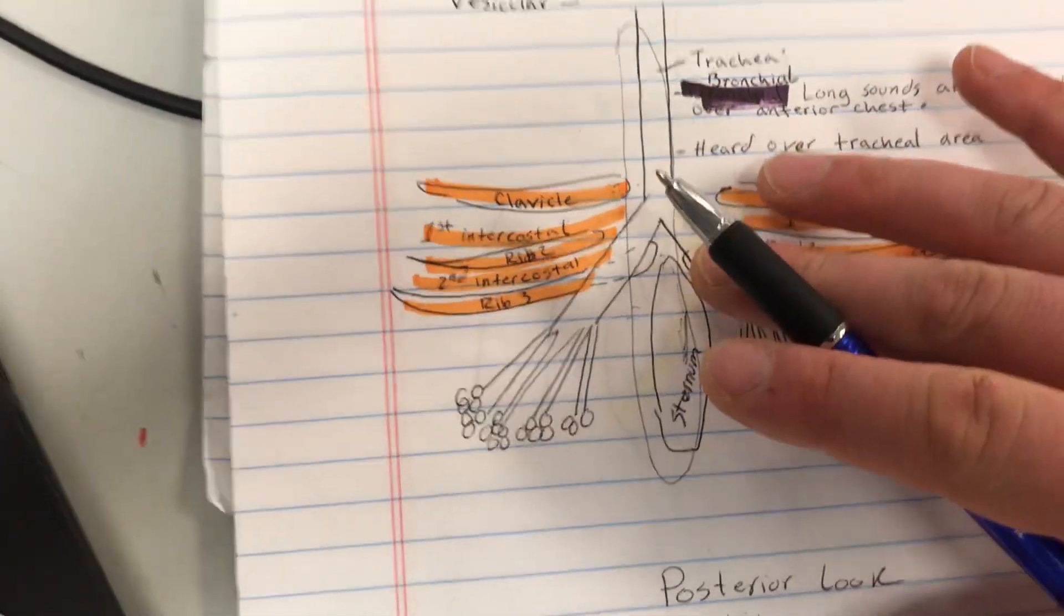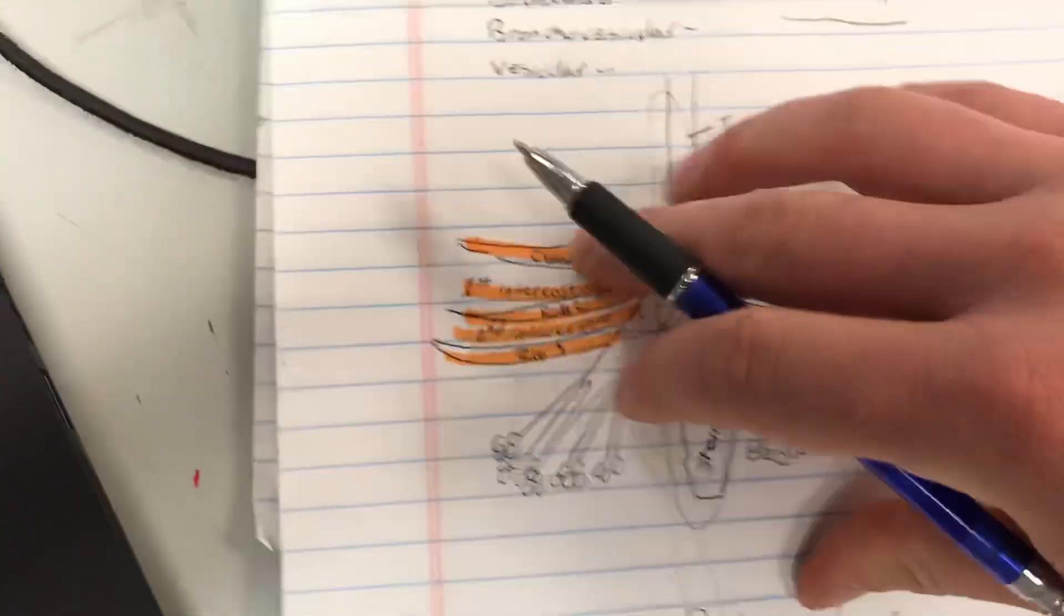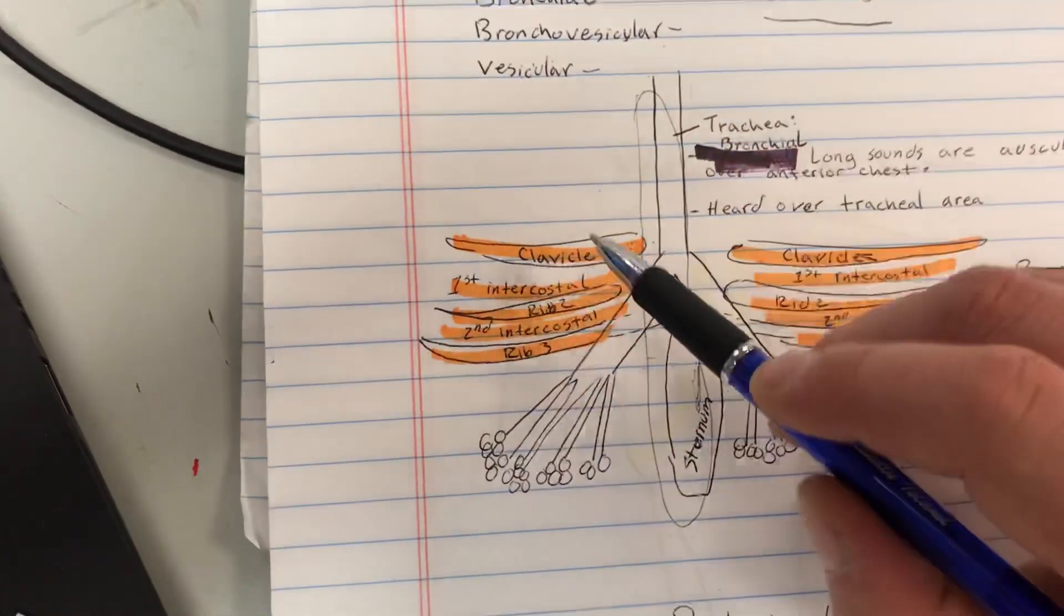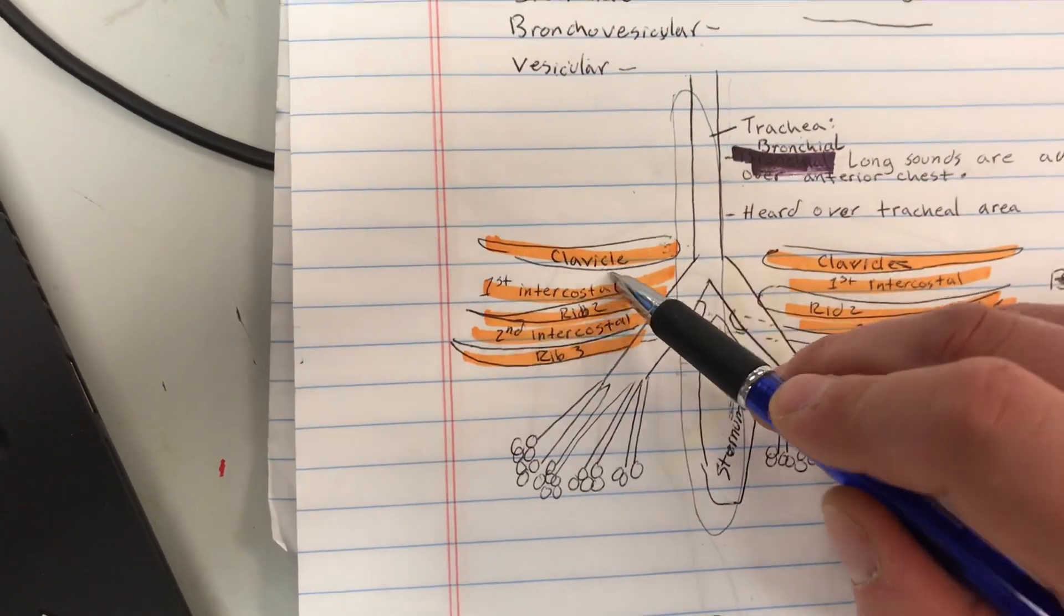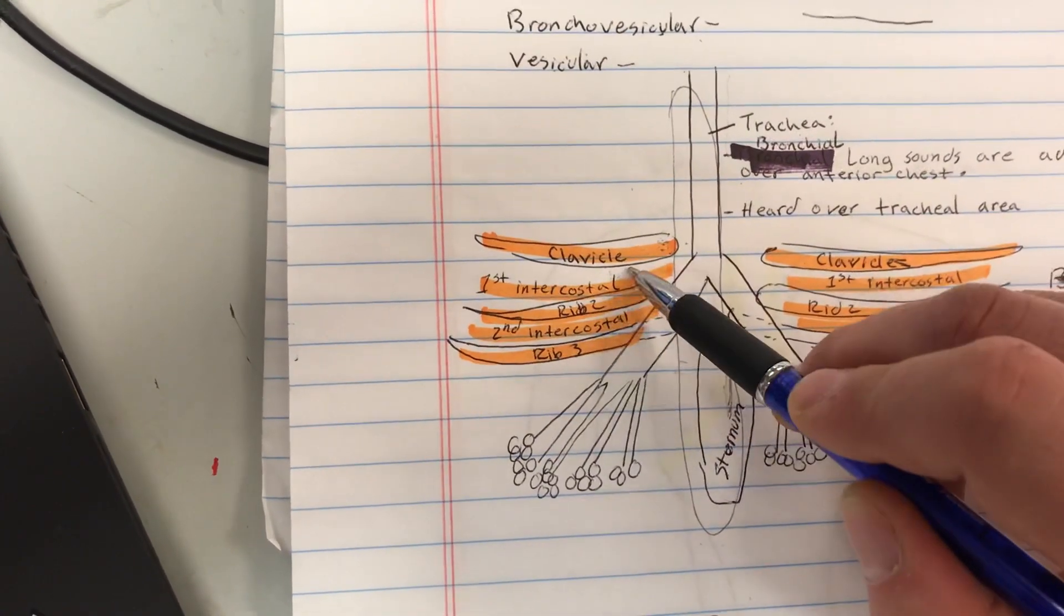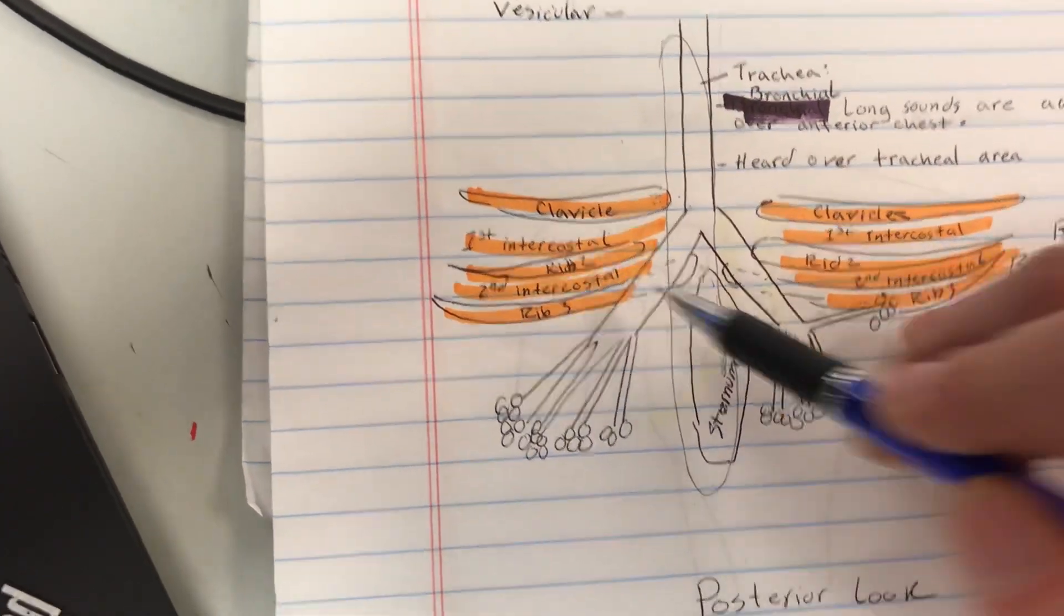So like I said, if you're taking bronchovesicular lung sounds on the front of your patient, anterior, we're going to auscultate for those in the first and second intercostal muscle, being between the first, second, and third rib. That's it.